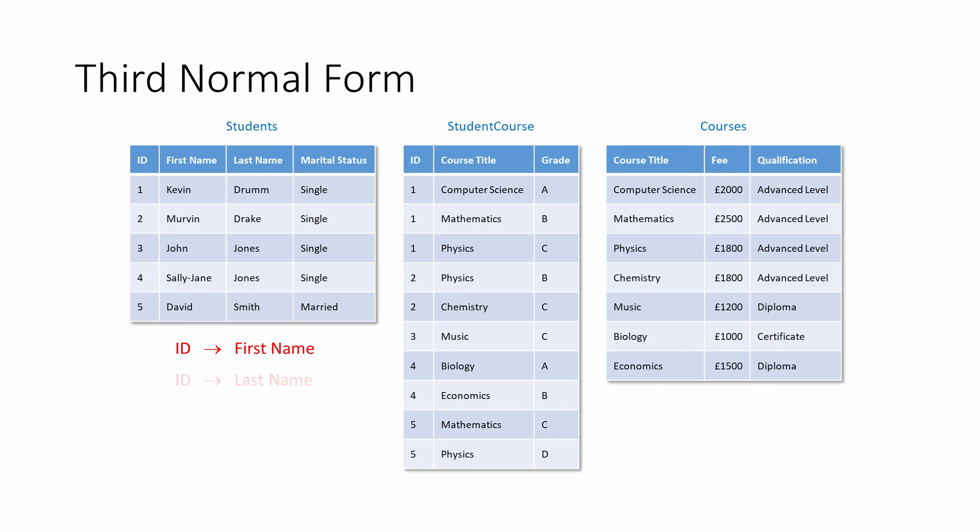In the same way, last name is functionally dependent on ID, and so is marital status. In the student course table, there's a composite primary key, which the grade is functionally dependent on. It can be written like this.